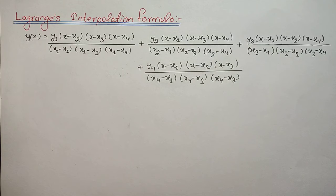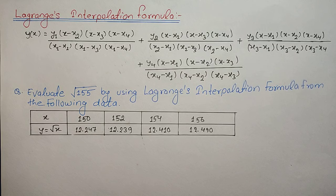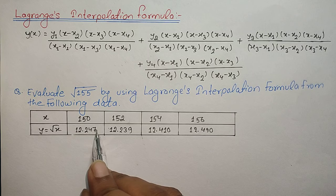Now let us begin the solution of the numerical. I will write down the question and after solving it, the interpolation method will become much clearer. The numerical asks us to find the value of √155, given values such as √150 = 12.247.